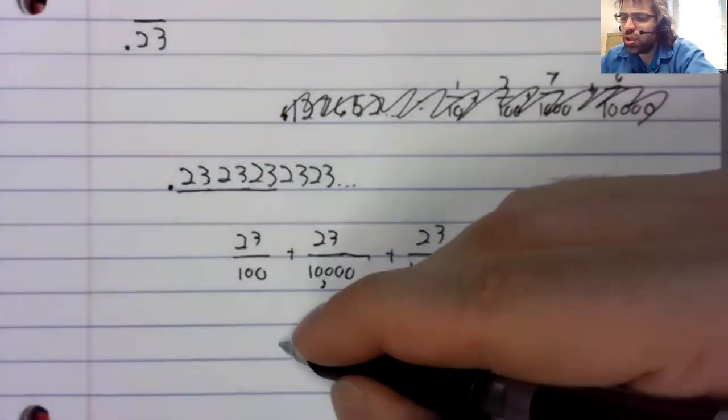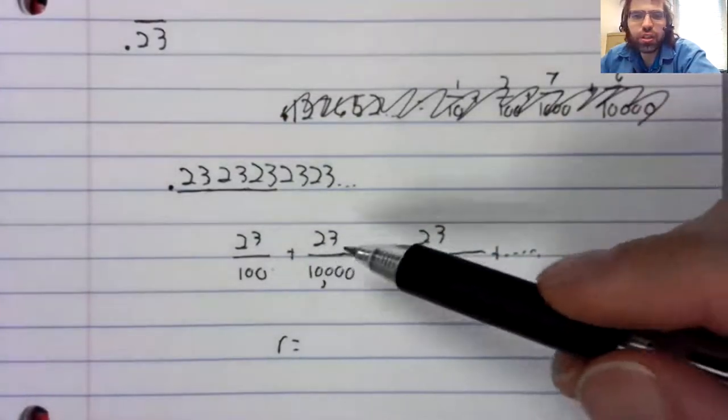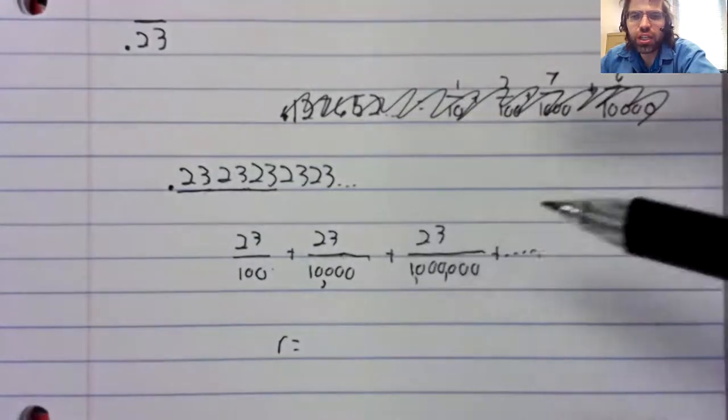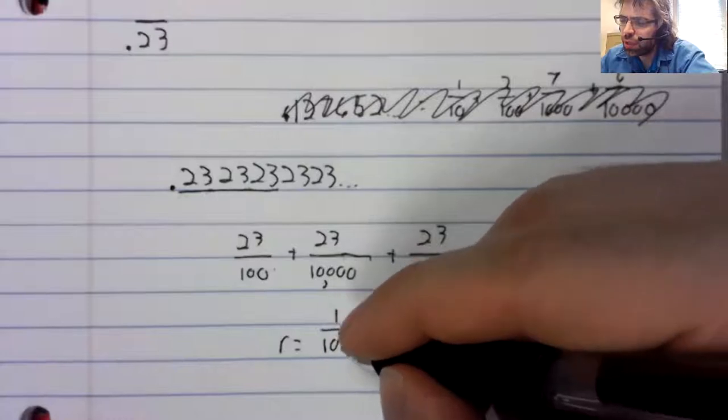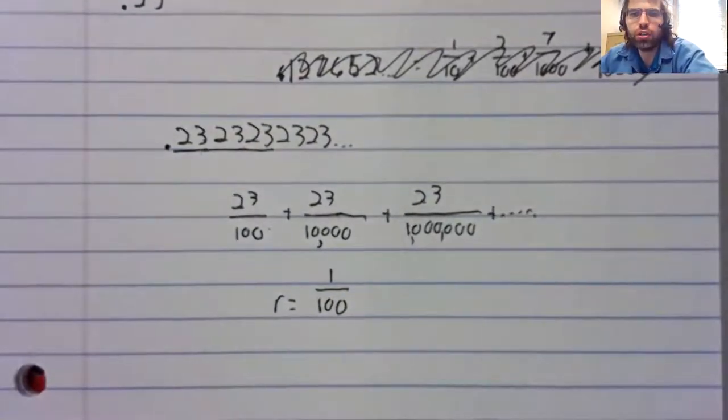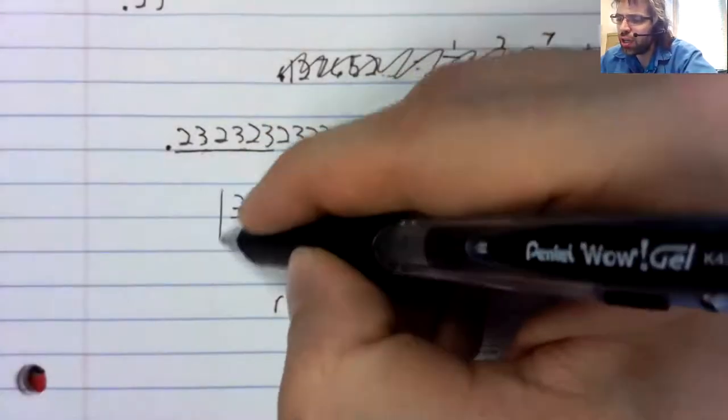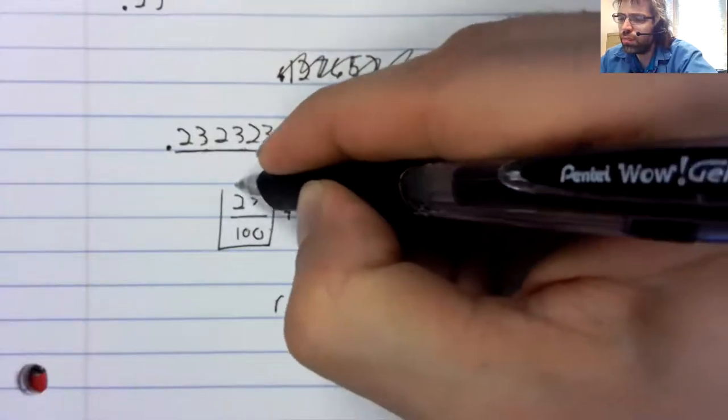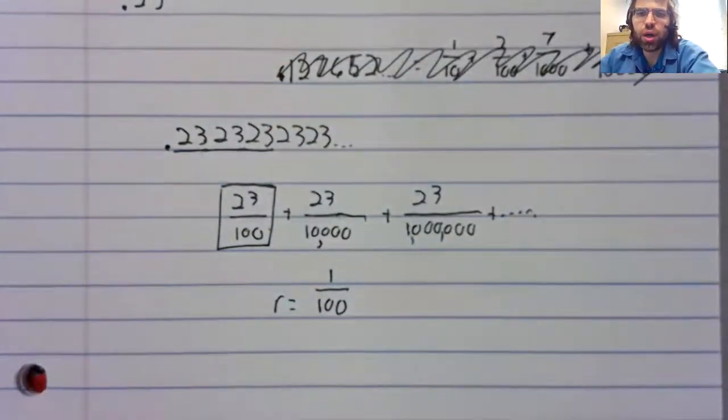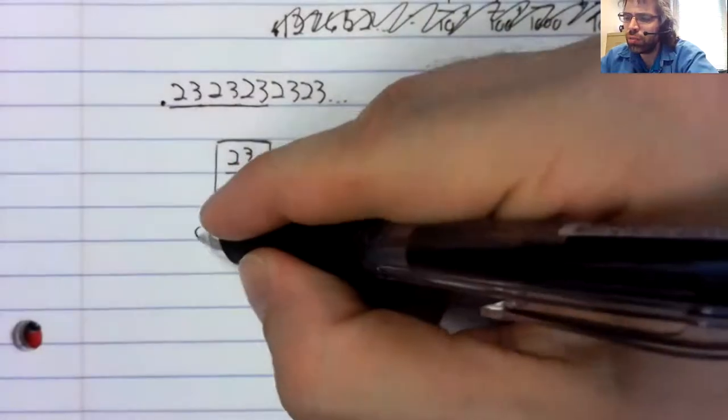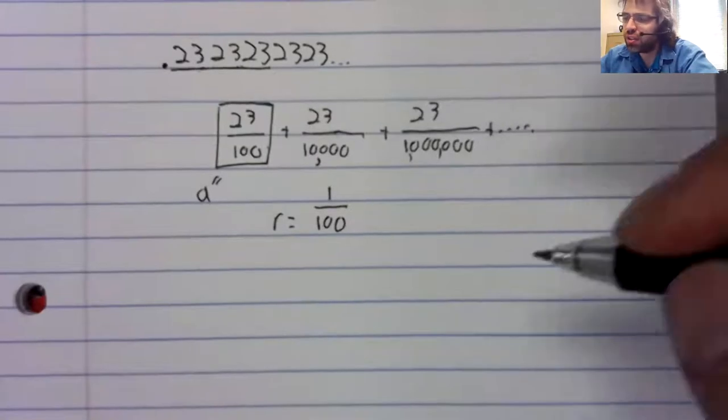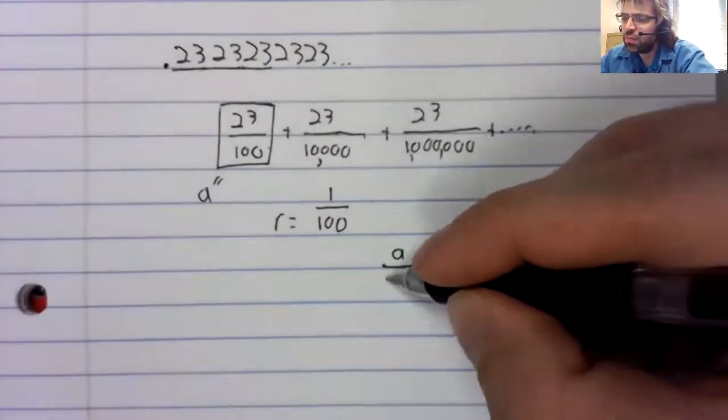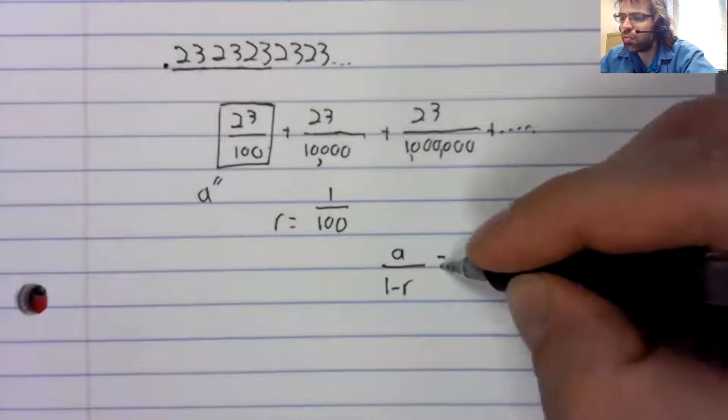This is geometric. To go from here to here, from here to here, from here to here, we're multiplying by one 100th every time. Our initial value, that is our first term, is 23 100th. And this sum is a over one minus r.